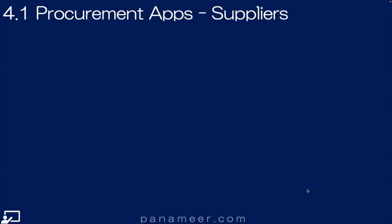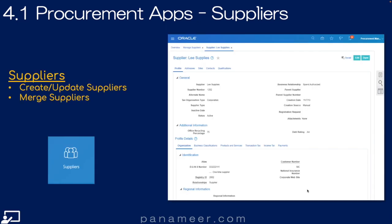And now we'll quickly walk through the different procurement applications. Slide 4.1: Procurement Applications — the Suppliers Application. This application allows Supplier Management or the Supplier Management Group to create and manage bidders and suppliers. Click the link above to watch a quick video explaining the Suppliers Application.